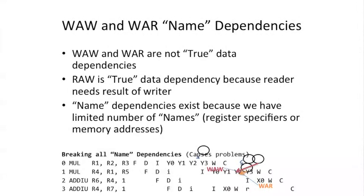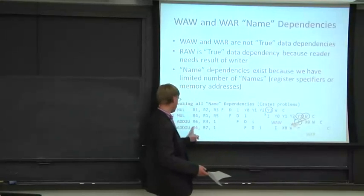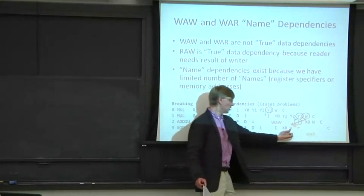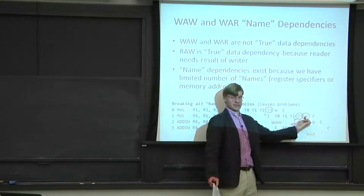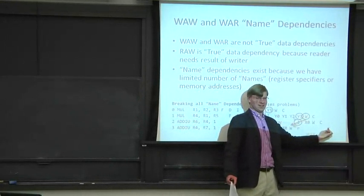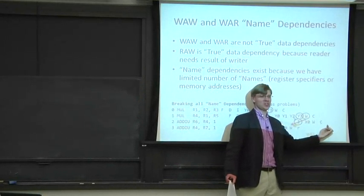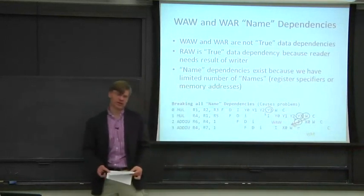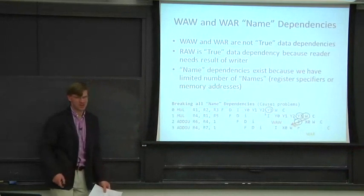One last interesting thing that happens here — and this is kind of fun — we do commit in-order in this pipe. But look what happens to register four. We wrote register four here, and then we write register four again, and then we commit from physical register four to architectural register four. So we just committed the wrong state to the architectural register file as well. We're having lots of problems here.